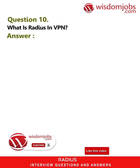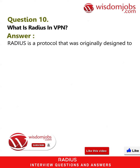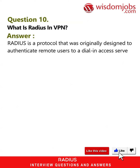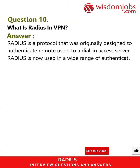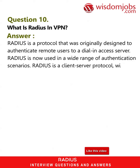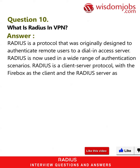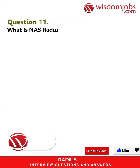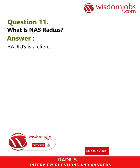Question 10: What is RADIUS in VPN? RADIUS is a protocol originally designed to authenticate remote users to a dial-in access server and is now used in a wide range of authentication scenarios. It is a client-server protocol with the Firebox as the client and the RADIUS server as the server.